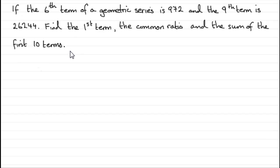So how are we going to do this? Well first of all, we're given a couple of terms here in the series. The 6th term. Now remember that for a geometric series or sequence, we should know that the nth term is given by a (the first term) times r (the common ratio) to the power n minus 1, ar^(n-1).